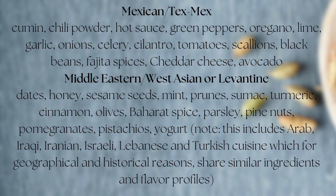Middle Eastern/West Asian or Levantine: dates, honey, sesame seeds, mint, prunes, sumac, turmeric, cinnamon, olives, baharat spice, parsley, pine nuts, pomegranates, pistachios, yogurt. Note: this includes Arab, Iraqi, Iranian, Israeli, Lebanese, and Turkish cuisine, which for geographical and historical reasons share similar ingredients and flavor profiles.